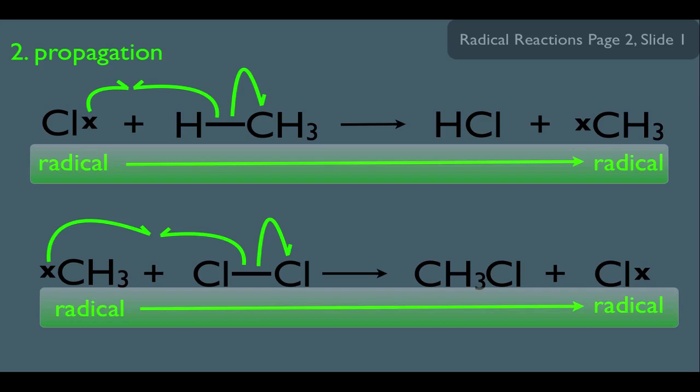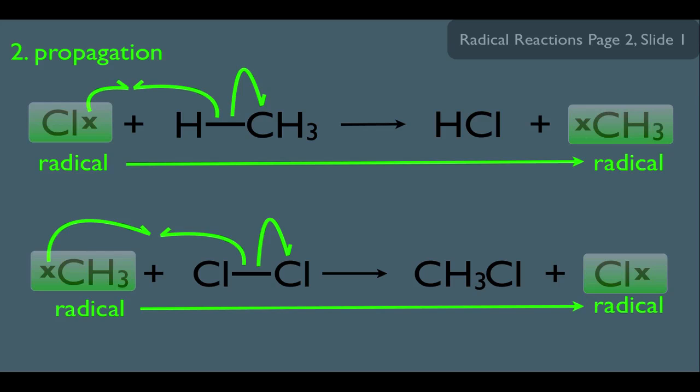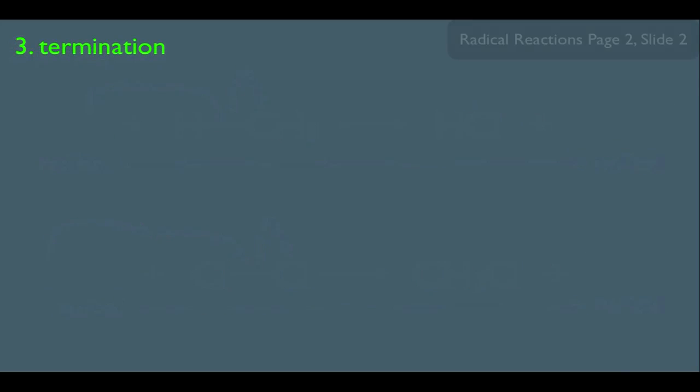However, we should also look at how these reactions end. Think about the big picture here for a second. As this reaction is proceeding, what we have in our reaction mixture is a buildup of radicals. Notice right here, shaded in green, we got Cl radicals floating around, and we got those methyl radicals floating around. What's possible here is in the reaction mixture that these radicals can actually meet up. If they do, that's what defines what's called the termination step of this mechanism.